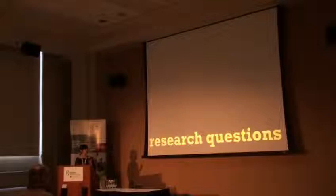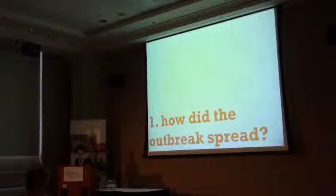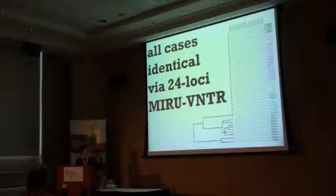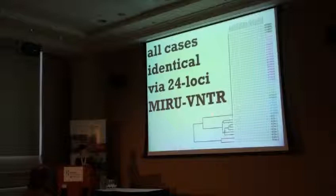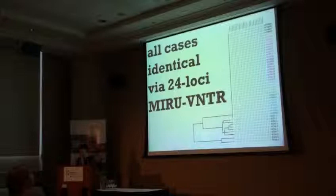At the end of 2008, when the outbreak had wrapped up, we had a couple of research questions. The first was: how exactly did that outbreak spread throughout the community? We had identified the source case, but where did the bug go from him? We did a more advanced form of molecular epidemiology later on. RFLP was replaced in about 2007 by this 24-loci MIRU-VNTR, basically a form of MLVA specific to TB. MIRU stands for Mycobacterial Interspersed Repetitive Units. We had 41 cases in total, 37 were culture positive, and 32 outbreak cases were selected for a study.